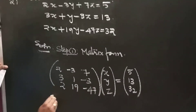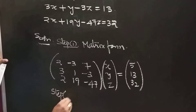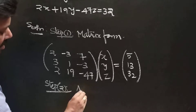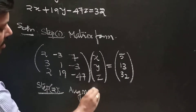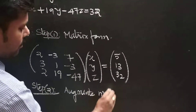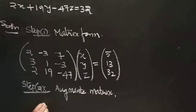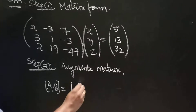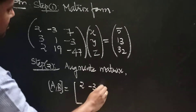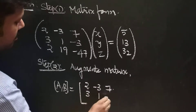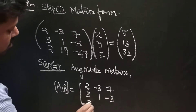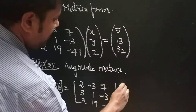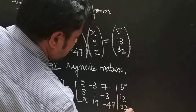Step number 2: write the augmented matrix [A|B]. The augmented matrix is [2, -3, 7 | 5; 3, 1, -3 | 13; 2, 19, -47 | 32].